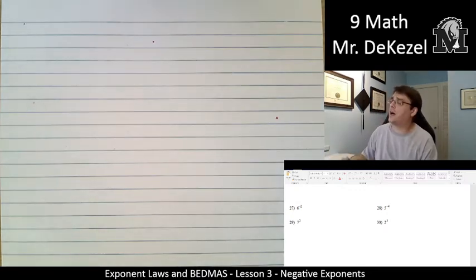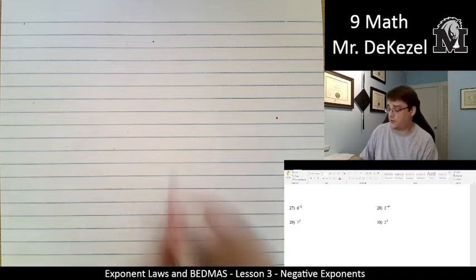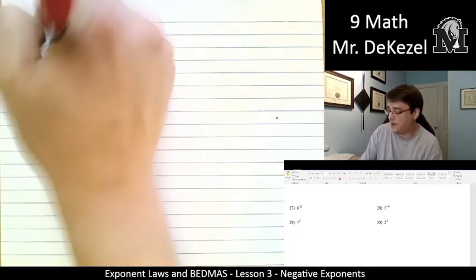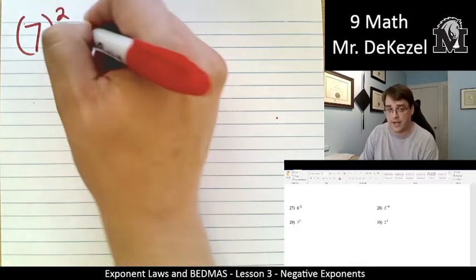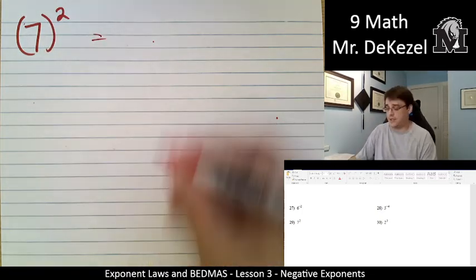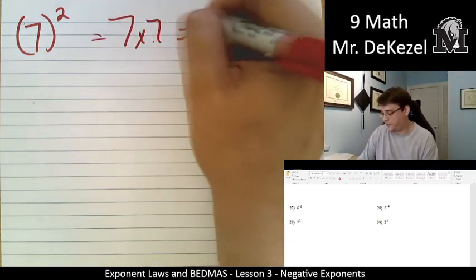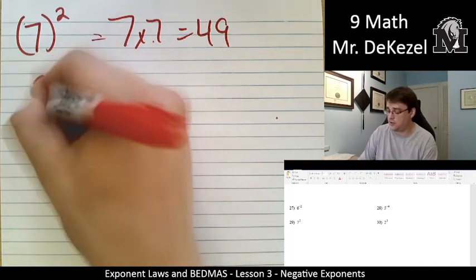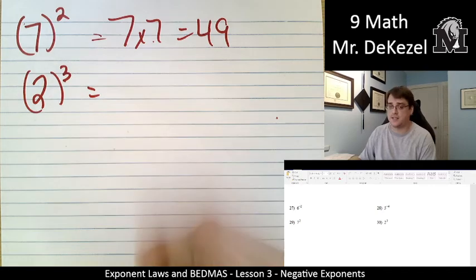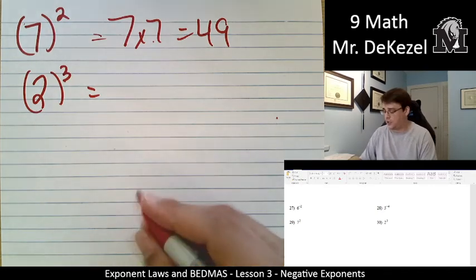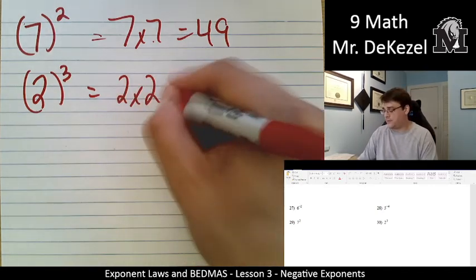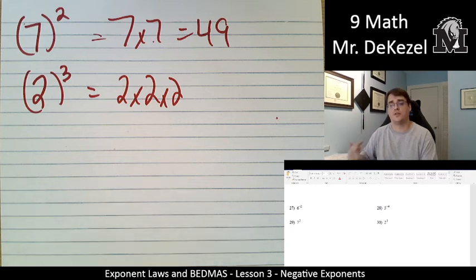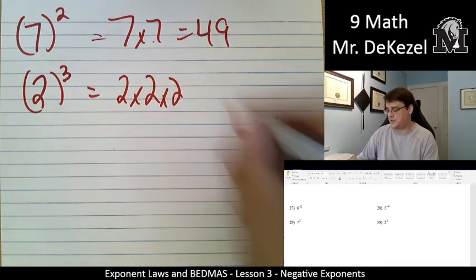Two more to do. These next two, it looks like, are thrown in here just to throw us off. We've got 7 to the power of regular 2, not negative 2. That means it's 7 times 7, which is 49. And it looks like we've got the next one is 2 to the power of 3. These aren't negatives, but that's okay, we can evaluate them as well. 2 times 2 times 2 times 2. So that's 2 times 2 is 4, times 2 is 8.